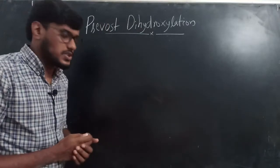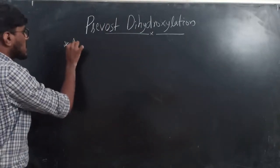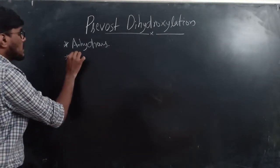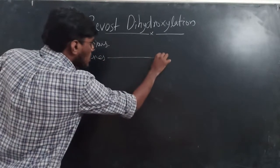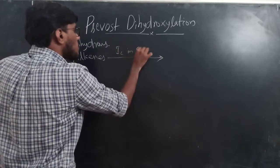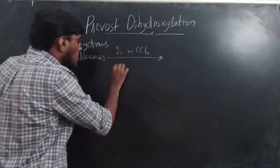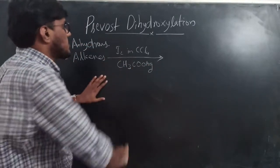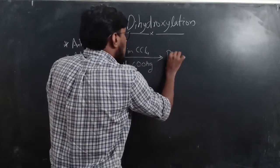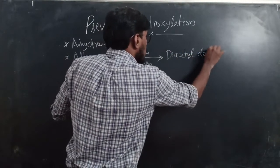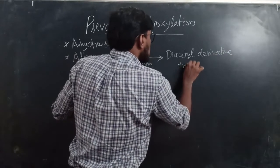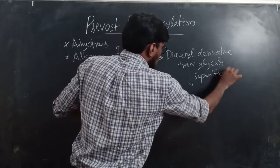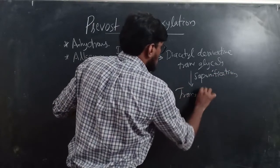What is the Prevost dihydroxylation reaction? In Prevost dihydroxylation, the reaction takes place under anhydrous conditions — that is, in the absence of water. Alkenes react with iodine in CCl4 and an equimolar amount of silver acetate (CH3COOAg). This first gives a diacetyl derivative of trans-glycols, which on saponification gives trans-diols.